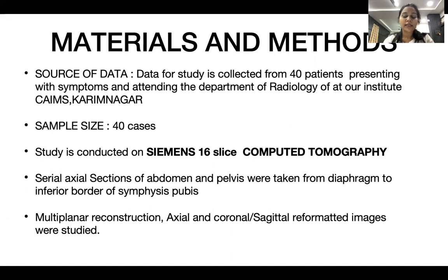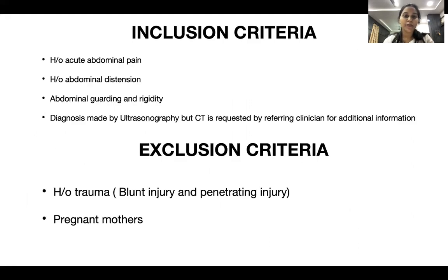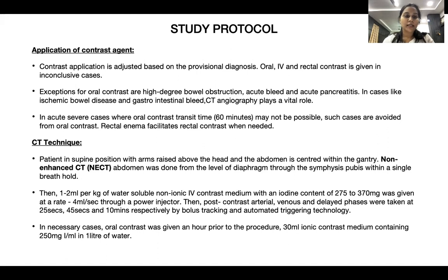Materials and methods: data was collected from 40 patients presenting with symptoms; sample size is 40 cases. The study was conducted on a Siemens 16-slice computed tomography. Inclusion criteria included history of acute abdominal pain, abdominal distension, and abdominal rigidity. Exclusion criteria were history of trauma and pregnant ladies. Contrast application was adjusted based upon the provisional diagnosis. Oral, intravenous, and rectal contrast were given in inconclusive cases. Exceptions for oral contrast include high-degree bowel obstruction, acute bleed, and acute pancreatitis. In severe cases where oral contrast transit time of 60 minutes was not possible, oral contrast was avoided.